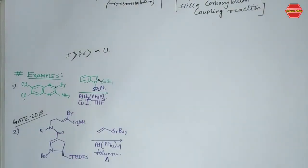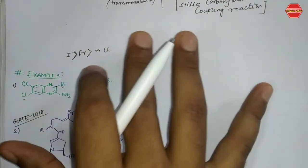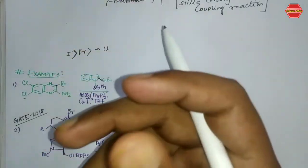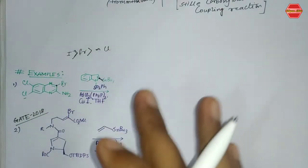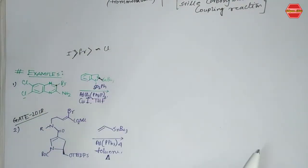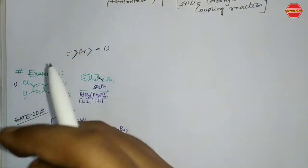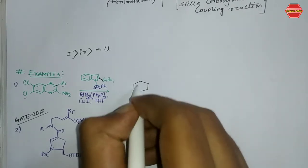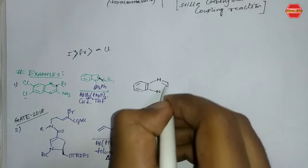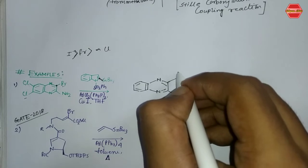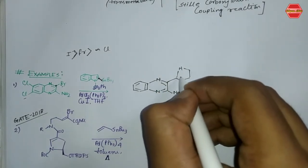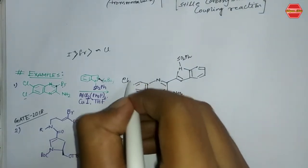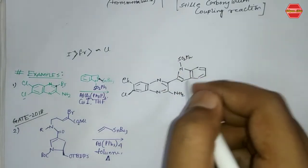This reaction is important because it can tolerate a wide range of functional groups. It is also not sensitive to moisture or oxygen, unlike other reactive organometallic compounds. That is why Stille cross-coupling is quite valuable. From this example, the Br-bearing carbon and the organotin carbon couple to form the bond. The major product retains the NH2, SO2Ph, and the two Cl groups at their positions.